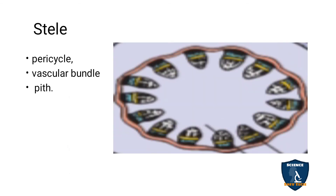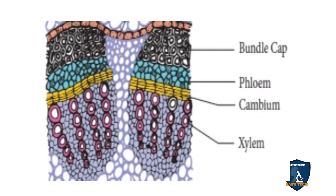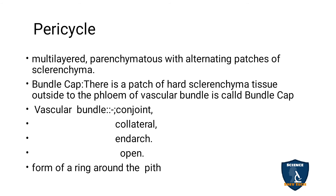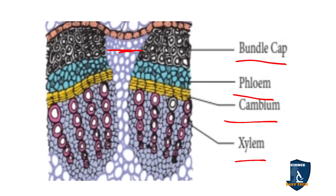The stele consists of pericycle, vascular bundle, and pith. The pericycle forms the bundle cap — made up of sclerenchyma cells — and is discontinuous, forming alternating patches with parenchyma cells. The hard sclerenchyma tissue outside the phloem that forms this hard cap portion is known as the bundle cap. The vascular bundle is conjoint, collateral, and open. Phloem and xylem together form a bundle on the same radius, with cambium present between them.